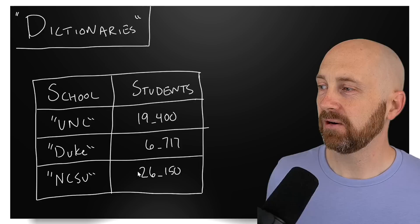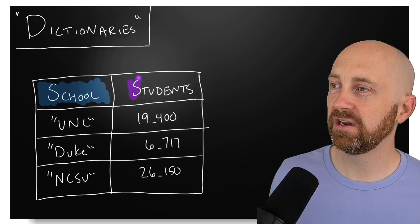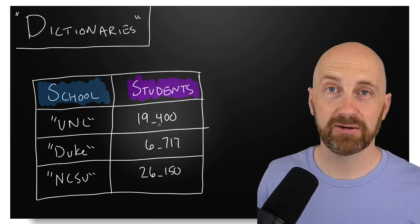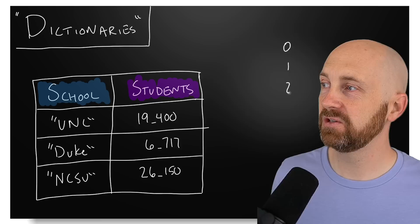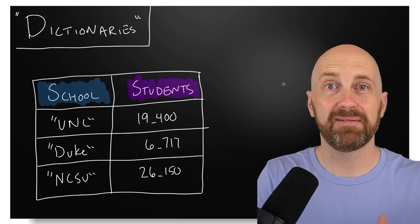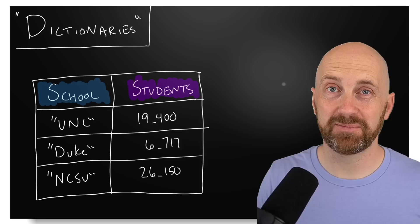Say we've got a table where the header is the school — what we want to look up values by — and the values associated with that school are the number of undergraduate students enrolled. For example, the string 'unc' would be associated with the integer value 19,400. Notice there's no indexing here in the way we've seen with lists, where you had zero, one, two as your indices with no flexibility in how you arrange items.